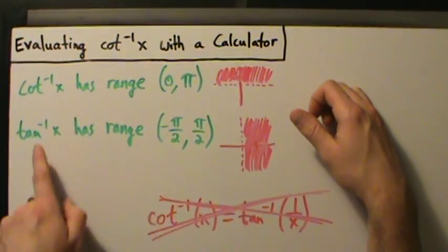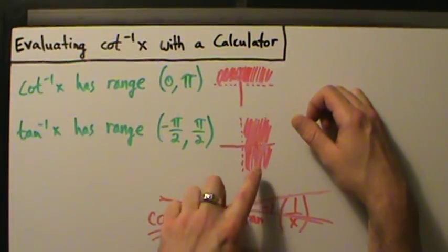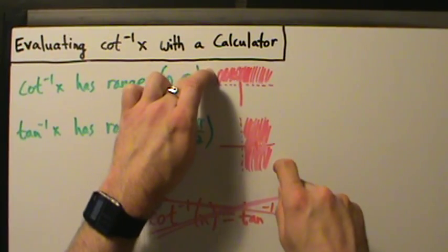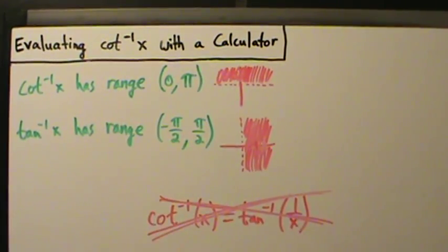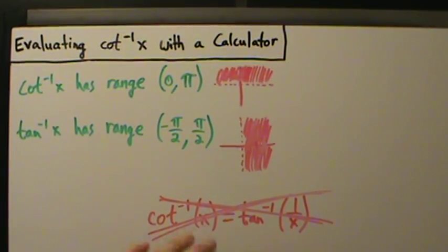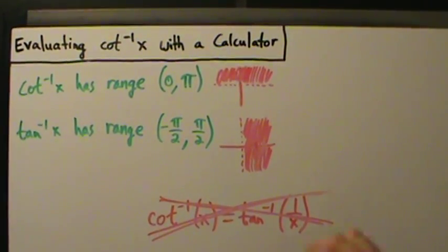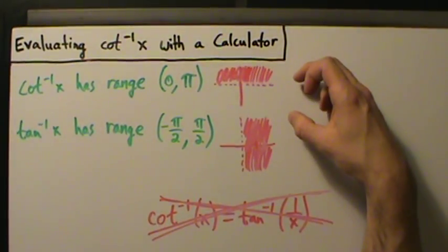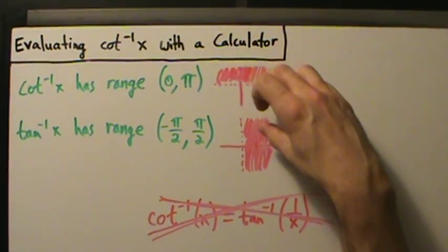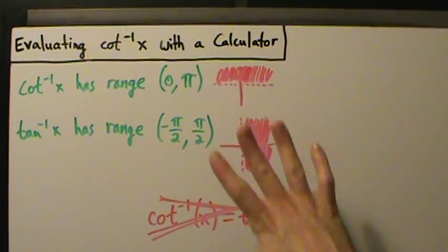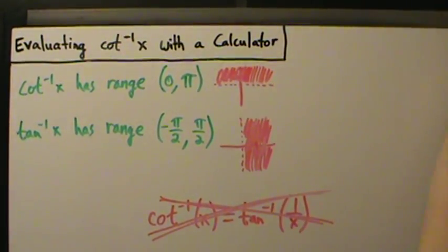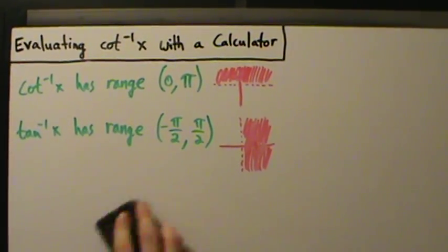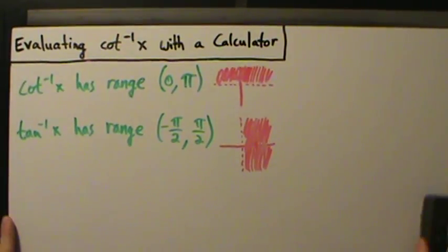Even though inverse cotangent is in quadrant 2 while inverse tangent is in quadrant 4, there's still a way we could do what we did before and make it work — but it would be more complicated. We'd have to break it into two cases: one case where we're in quadrant 1, and another case where inverse cotangent is in quadrant 2 and inverse tangent is in quadrant 4. That's really more work than we need to do.